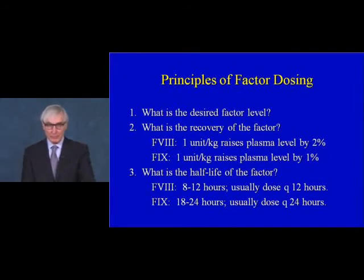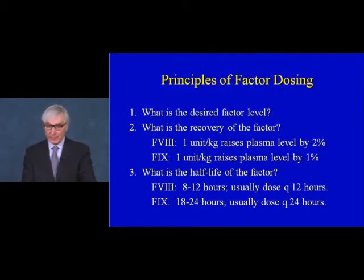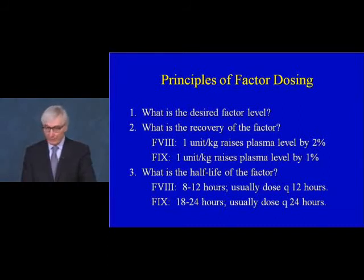There are principles observed in providing factor dosing. One considers the desired factor level: 100% for severe hemorrhage, 15 to 20% for a minor bleed. One unit per kilogram of factor 8 generally raises plasma level by 2%, so to reach 100% one would need 50 units per kilogram. Factor 9 raises plasma level by only about 1% per unit per kilogram. The half-life of the factor determines dosing frequency: factor 8 with a half-life of 8 to 12 hours leads to dosing every 12 hours, and factor 9 with a half-life of 18 to 24 hours leads to dosing about every 24 hours.